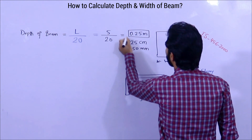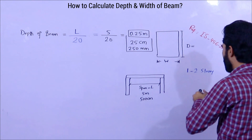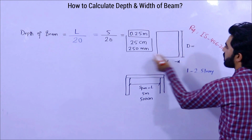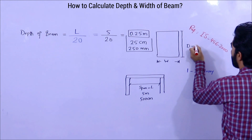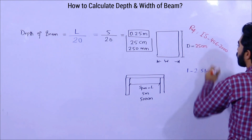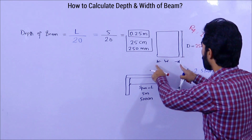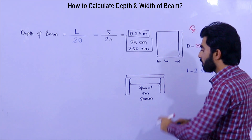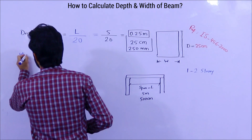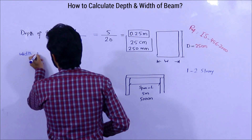So the required depth of the beam is 250 mm, or 25 centimeters. That is the depth for a 5-meter span. Now let's find the width. To find the width of the beam, we use another formula from IS 456:2000.